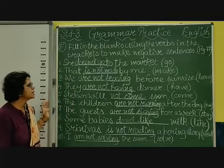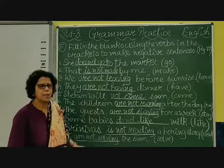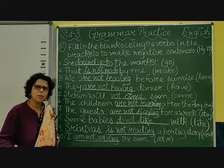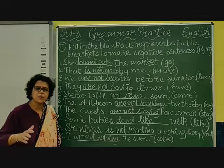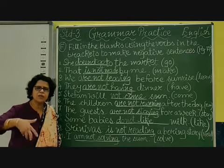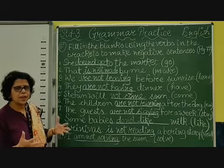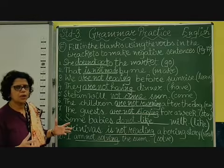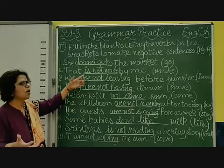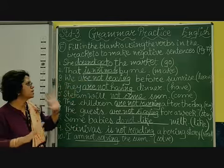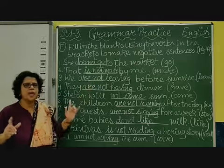Coming to the second one: 'That is not made by me,' and the verb given is 'made.' Now here we use 'made' because it refers to something already completed. You cannot say it is not made if it is still in progress. 'I am making it' is the affirmative in present continuous, or 'I will make it' in simple future. But 'this is not made by me' means the action is completed.